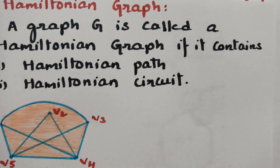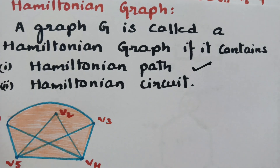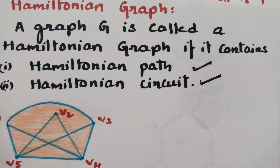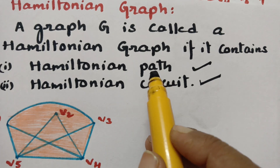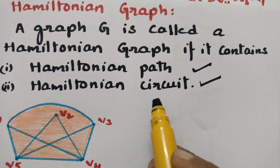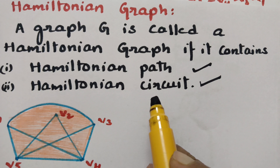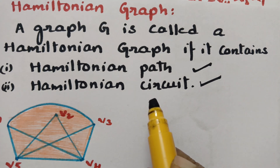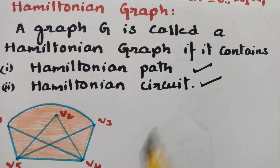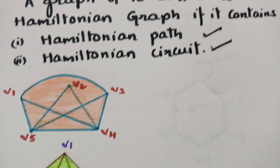A graph is a Hamiltonian graph if it satisfies both: first, it should contain a Hamiltonian path — meaning it covers each and every vertex only once with no repetition; and second, it should contain a Hamiltonian circuit — a closed cycle where the starting and ending vertex are the same. Let us check whether this given graph is a Hamiltonian graph or not.